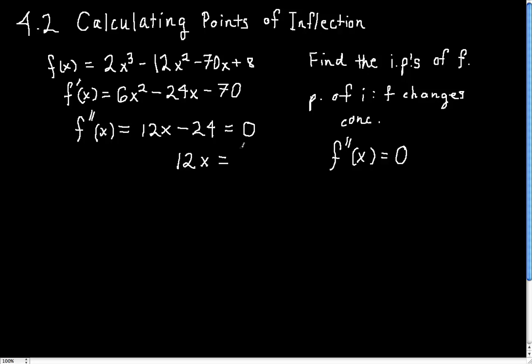We move 24 to the other side by adding 24 to both sides, and then we divide both sides by 12, and we get x equals 2.